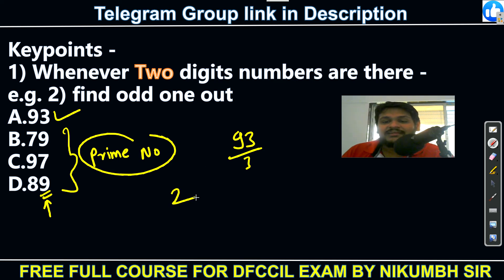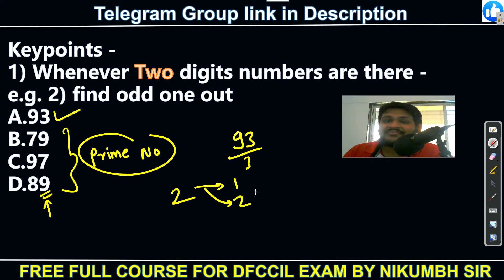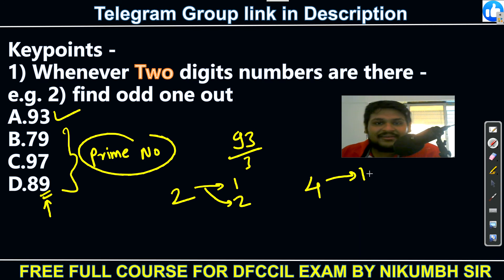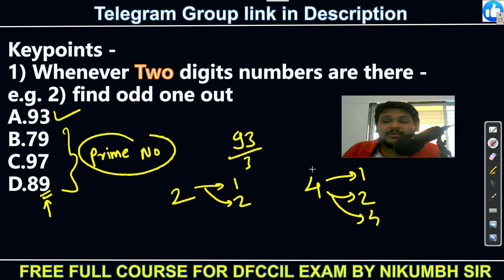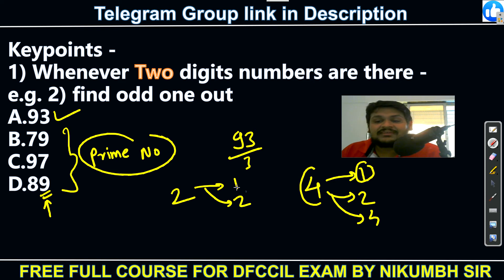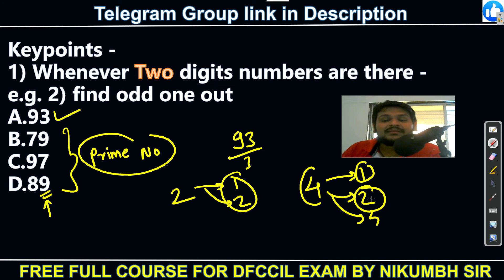To clarify prime numbers: 2 is divisible only by 1 and 2 — it is prime. 4 is divisible by 1, 2, and 4 — so it is not prime. A prime number must only be divisible by 1 and itself. Keep this in mind since numerical ability is a separate section.